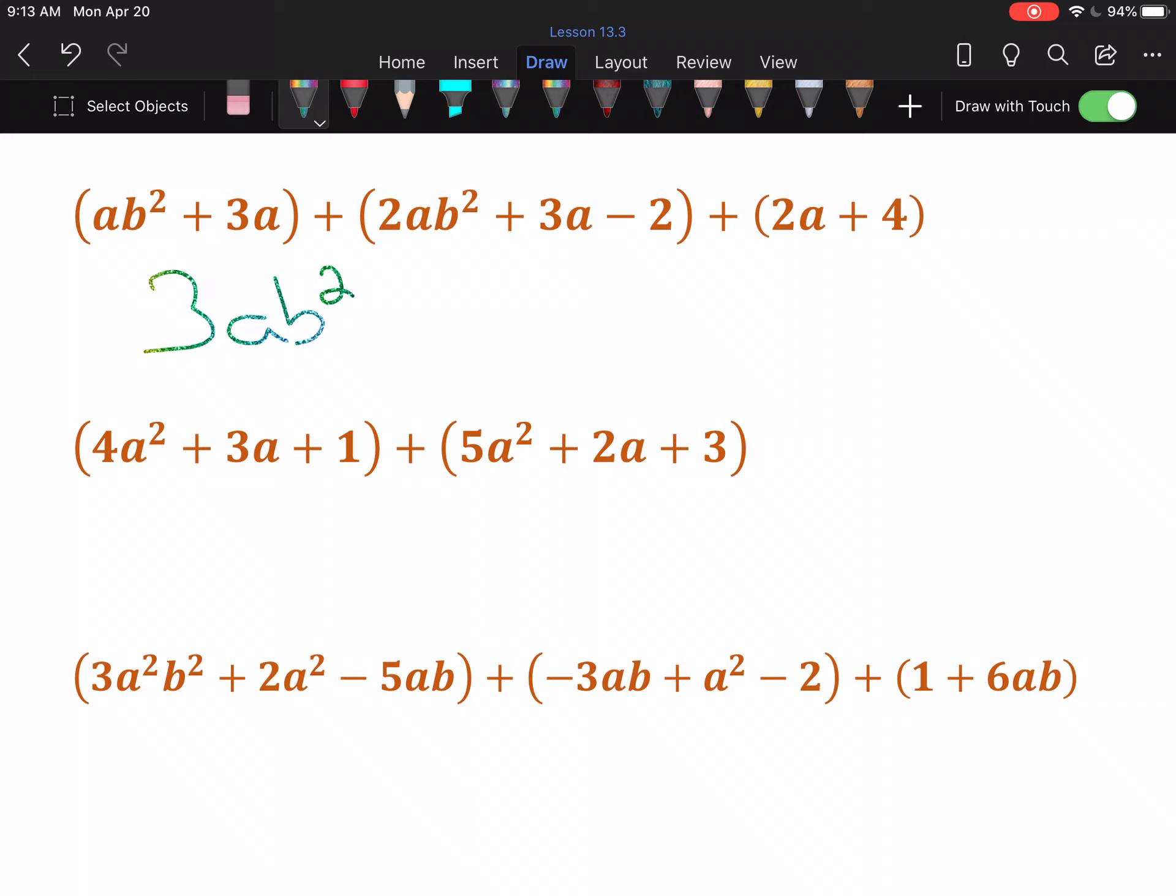Next up are my a's. I have 3a in the first set, 3a in the second set, and 2a in the third set. They're all positive. So 3 + 3 + 2 is 8, so there are 8a's. And as far as plain numbers go, we have a -2 and a positive 4. When those get put together, it's positive 2.